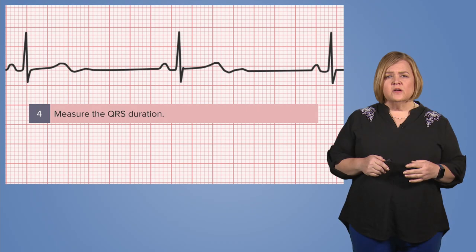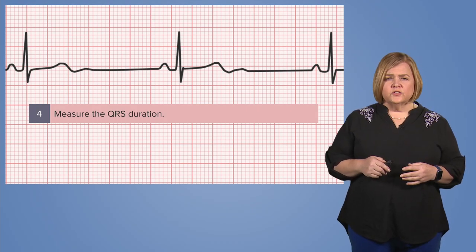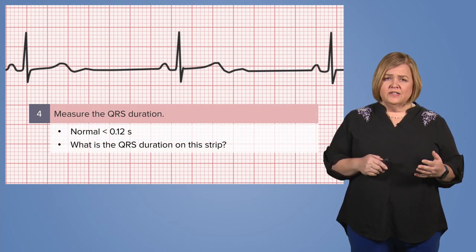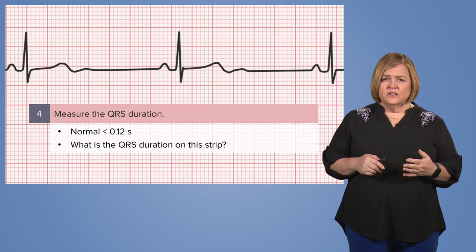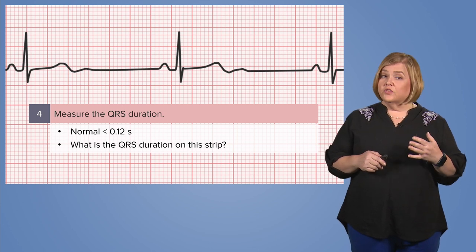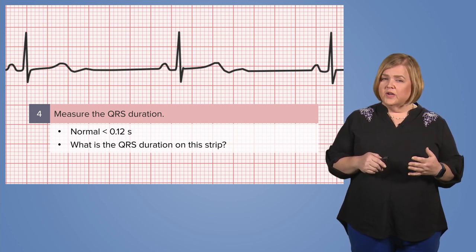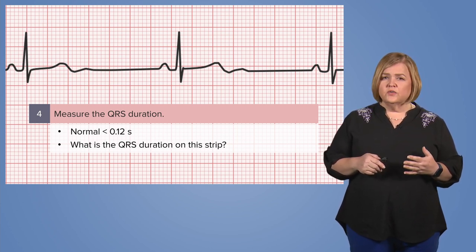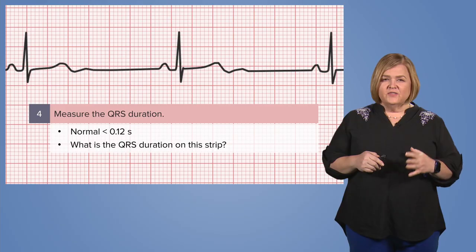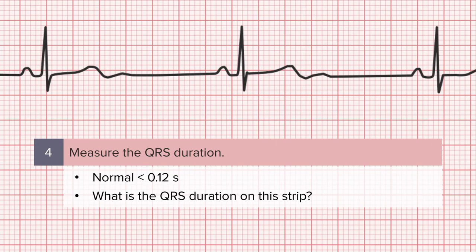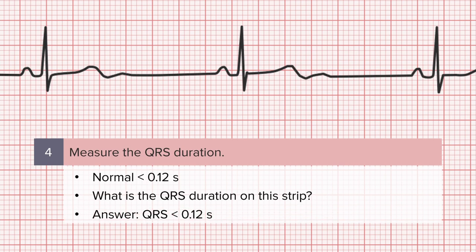Step four: measure the QRS duration. Less than 0.12 seconds, or 3 small squares, is considered normal. Pause the video, measure the QRS duration on this strip, and compare your answer with the one that will display.